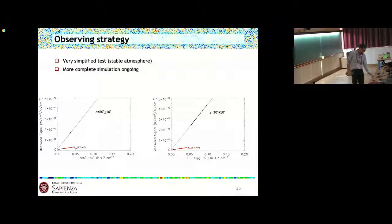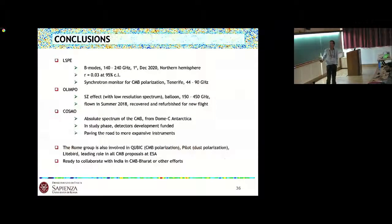This is very challenging but it's interesting because this is going towards new kinds of measurements. Let me summarize. We have LSPE for B-mode, between 44 and 140 gigahertz, one degree resolution, planned to start December 2020 in the northern hemisphere. We will go for R of 0.03 at 95% confidence level. We have OLIMPO which was flown and is in refurbishing phase. And we have this plan for COSMO which is in the study phase and is trying to pave the road for more expensive and maybe space-based instrumentation to measure the distortion of the monopole of the CMB. Our group is also involved in other instruments like CubicPilot, LiteBIRD, and has a leading role in all the CMB proposals to ESA and is ready to collaborate with India for CMB Bharat and other efforts. Thank you very much.